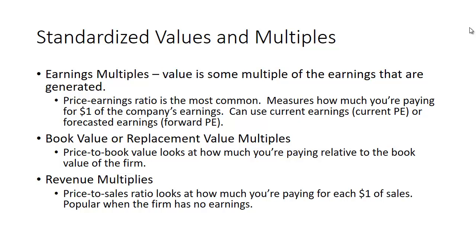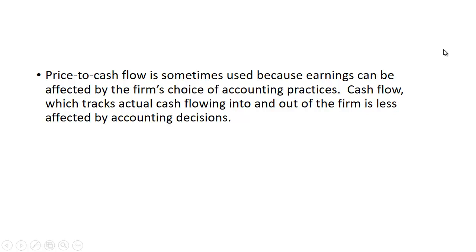You can also have book value or replacement value multiples. Price-to-book value looks at how much you're paying relative to the book value of the firm. You might have a revenue multiple — price-to-sales looks at how much you're paying for each dollar of sales, and this is a popular one when the firm has no earnings. Remember, earnings are not revenues or sales; earnings are what you have after you pay off all the expenses. Price-to-cash flow is another one, and it's sometimes used because earnings can be affected by the firm's choice of accounting practices.